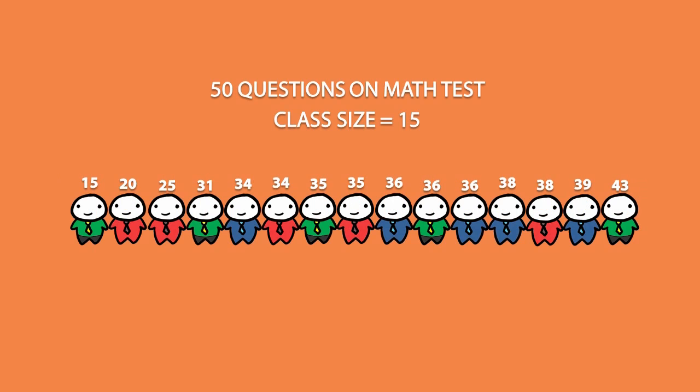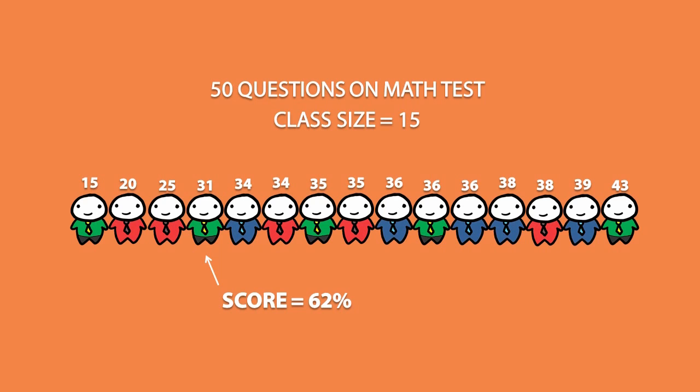Do not confuse percentage with percentile. For example, we see that this person scored a 31 on the test, which is equal to 62%. This does not mean he scored in the 62nd percentile. In fact, this person is roughly in the 23rd percentile. I say roughly because there are many ways you can calculate the percentile of a data set and you can yield different answers. But for the specifics of the course you are studying, you will not need to know that.